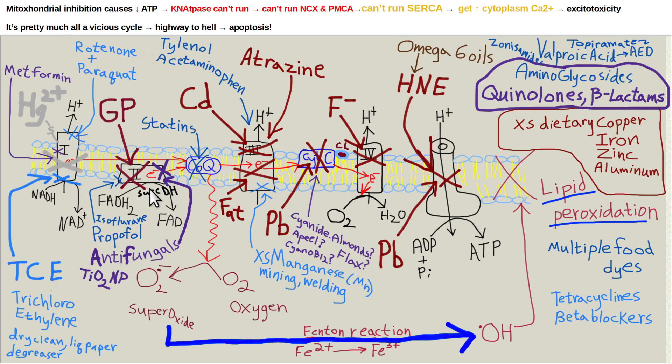Heavy metal contaminants are also a concern. For example, mercury is a common contaminant of high fructose corn syrup and it inhibits complex 1.